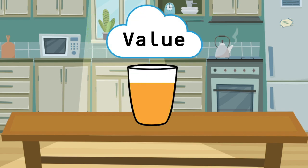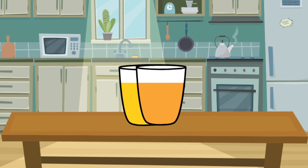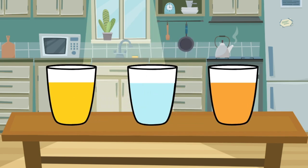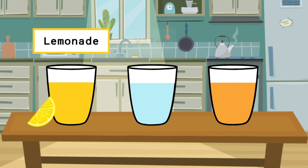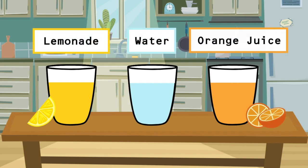So we know variables can hold all different kinds of values, just like a cup can store lots of different kinds of liquids. In coding, we can label a variable based on the type of value that it stores, just like you could label the cup based on the liquids inside.